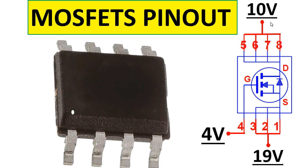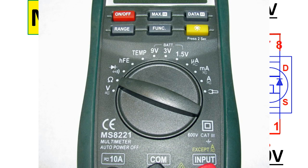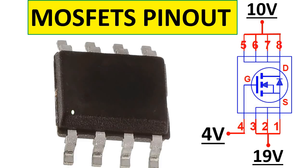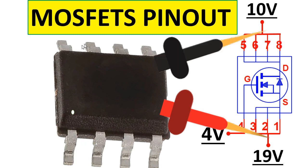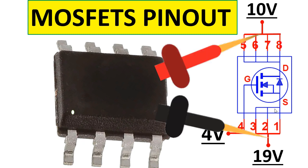To test this MOSFET, you should test between the drain and source using a multimeter set to buzzer or continuity mode. Put the red probe on the source and the black probe on the drain — you should get a reading, because the diode has an anode and a cathode.